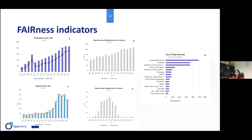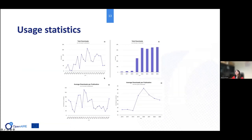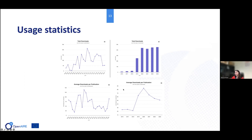Finally, the usage statistics. These come from the OpenAIR usage counts service, which counts views and downloads of research products not only in the OpenAIR portal but also in the repositories that host the products. We can show total downloads over time, considering either the year of publication or the year of the download — when the user actually downloaded a publication — and similarly we can compute the average.